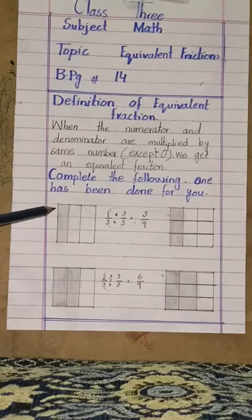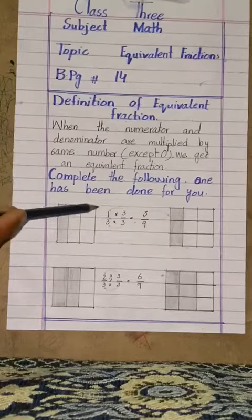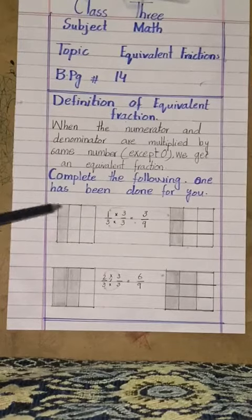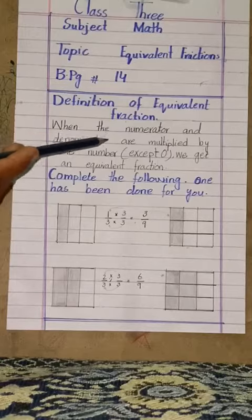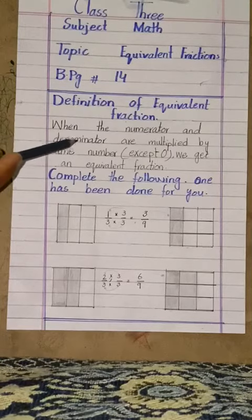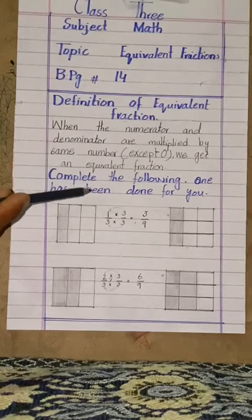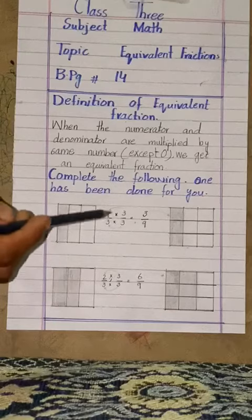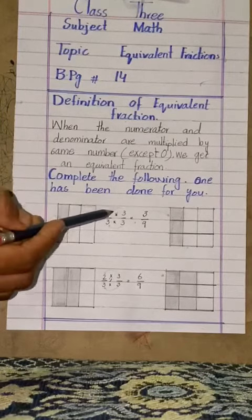One is colored. Its fraction will be 1 over 3. When we multiply numerator and denominator with the same number, then we will get another fraction, an equivalent fraction.